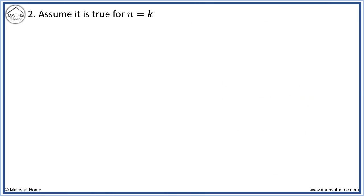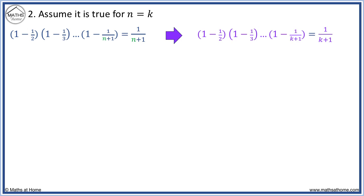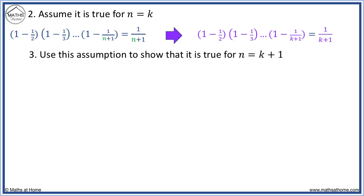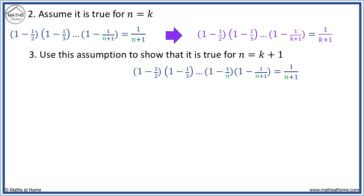Now we assume true for n equals k. We take the original statement and wherever there is an n, we substitute k. This is an equation we assume to be true and will use in the next step. Here we set up an equation we want to prove — this is the main algebraic part. We take the original statement and include the term 1 minus 1 over n before the final bracket, then substitute n equals k plus 1 to obtain the equation we wish to prove.